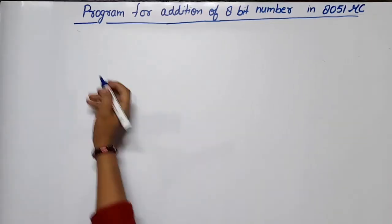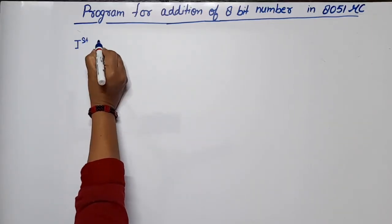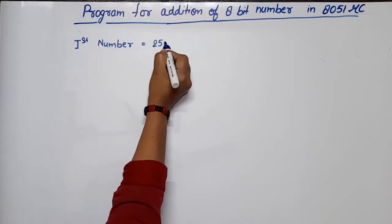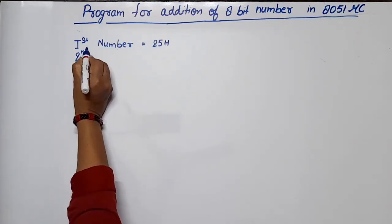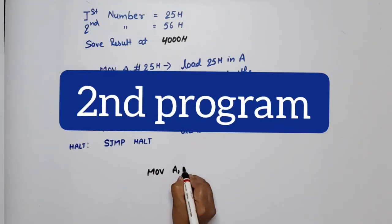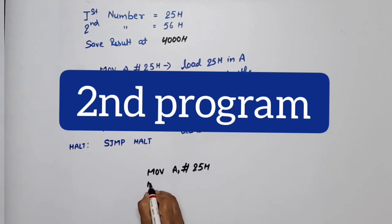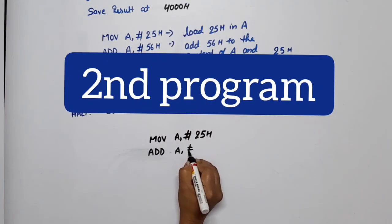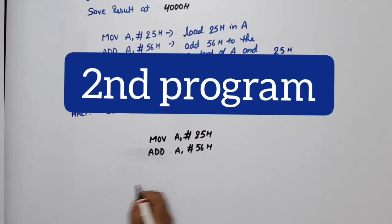This is a general program. Alternatively, suppose the first number is 25H and second is 56H. We can write: MOV A, #25H on the first line, then ADD A, #56H on the second line.